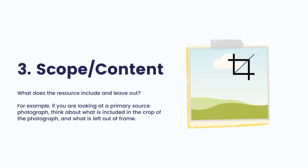Third, look at the scope and content. What does the resource include and leave out? For example, if you are looking at a primary source photograph, think about what is included in the crop of the photograph and what is left out of the frame.